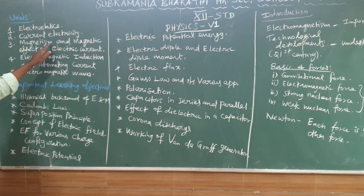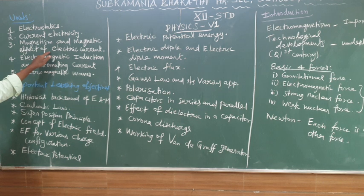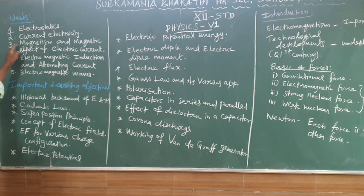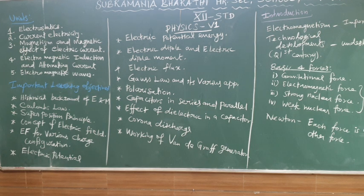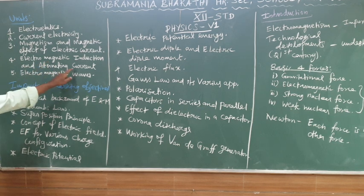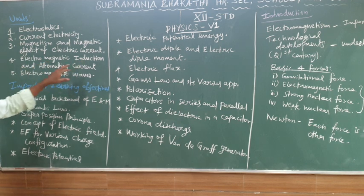The fourth lesson is Magnetic Effect of Electric Current. The fifth lesson is Electromagnetic Induction and Alternating Current. DC means Direct Current. AC means Alternating Current.